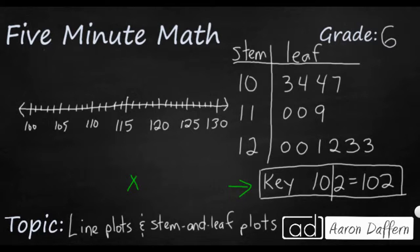In this case, the 10 in the stem is going to represent the hundreds and the tens place, because a 10 slash 2 actually means 102. So this 10 and then a 3 in the leaf actually stands for 103. This 11 and 0 in the leaf stands for 110.